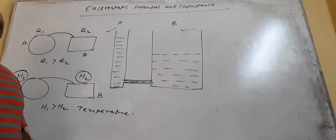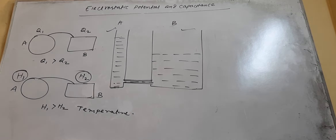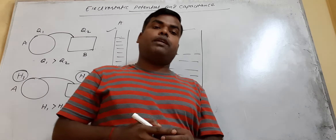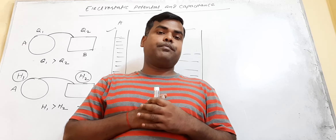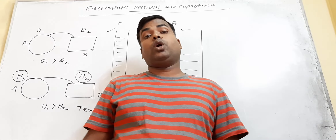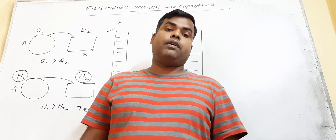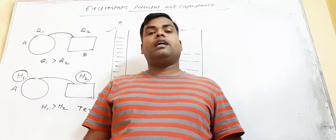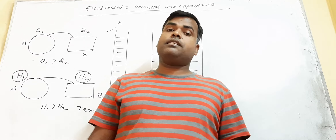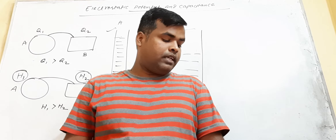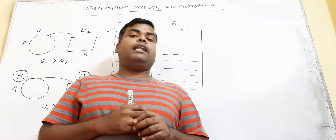Similarly, the amount of heat doesn't determine the direction of flow of heat — temperature determines it. The amount of liquid doesn't determine the direction of flow of liquid — the level or height determines it. Similarly, in the case of two charged bodies, the amount of charge doesn't determine the direction of flow of charge. Then what determines it? That is the electric potential. Electric potential is the physical quantity which determines the direction of flow of electric charge. The positive charge always flows from a body of higher potential to a body of lower potential. The negative charge flows from a body of lower potential to a body of higher potential. This is the qualitative definition of electric potential.